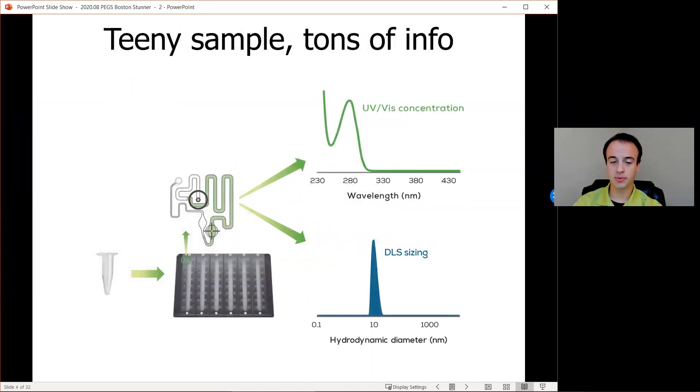Here's how it all happens. Two microliters of sample is pulled into the microfluidic circuit. Within that circuit, the sample is read multiple times for UV-Vis and DLS data. UV-Vis gets you concentration and DLS gets you size and size distribution. One read offers quantification data of your sample and simultaneously gets you information about its quality, whether or not it has aggregation problems.